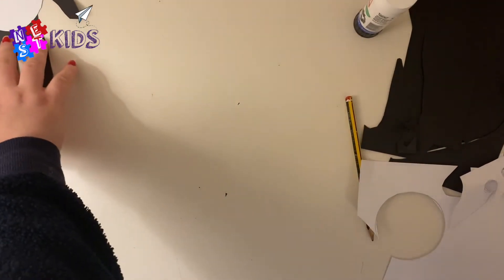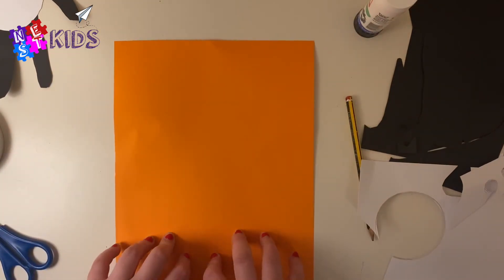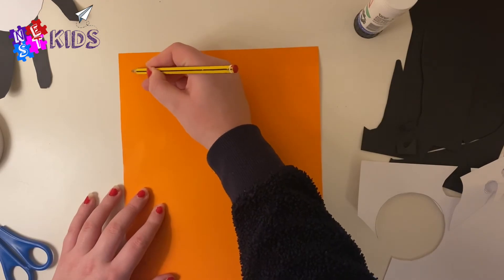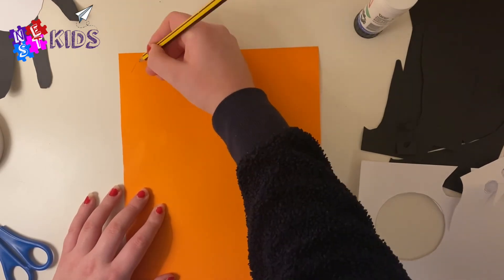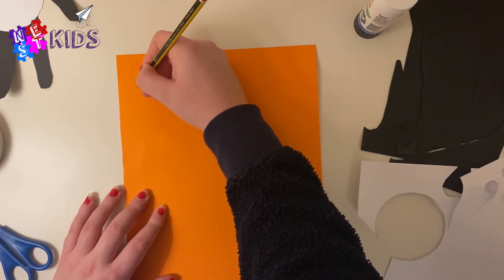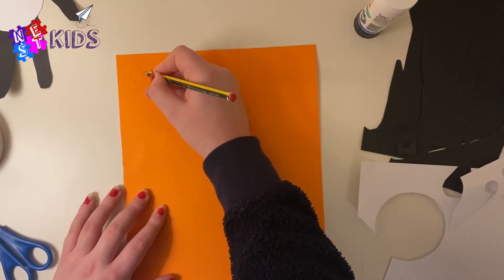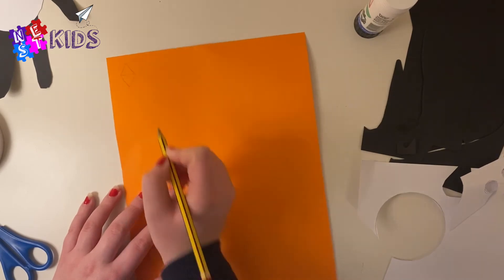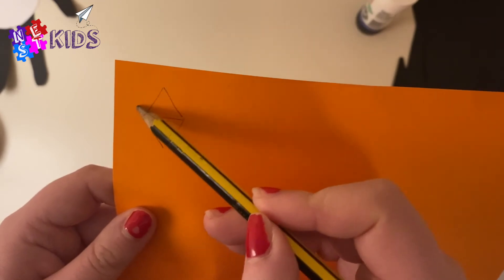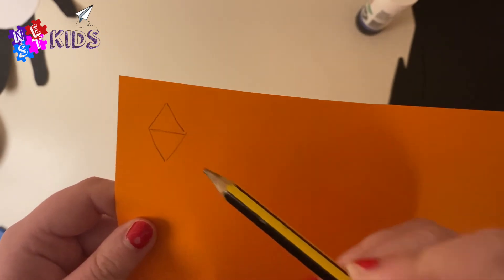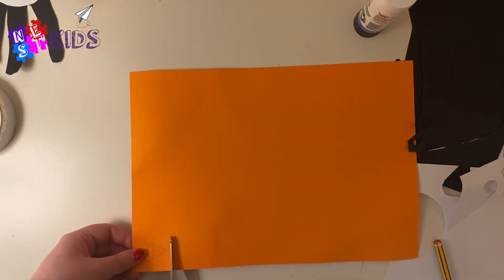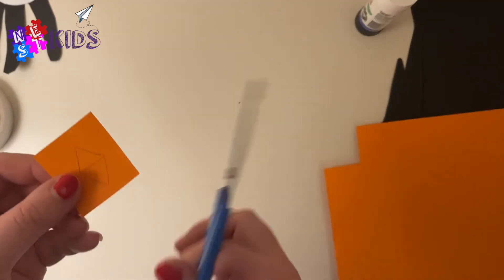Next, we are going to get your orange card and your pencil. Now I want you to draw a diamond shape, which is basically two triangles put together. You can see here, a diamond. Now put a line across the middle of your diamond. This is going to be the beak, the mouth of the penguin.